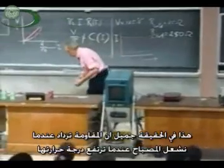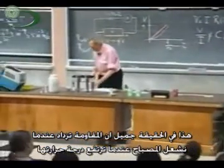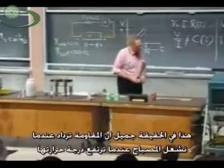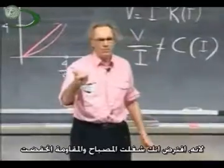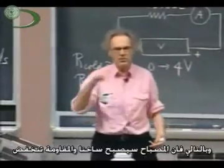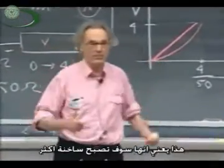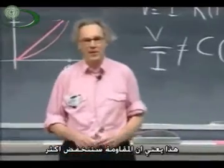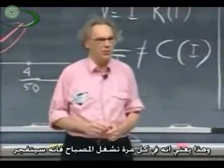It is actually very nice that resistances go up with light bulbs when the temperature goes up. Because suppose it were the other way around. Suppose you turn on a light bulb and the resistance would go down. The light bulb gets hot. Resistance goes down. That means the current goes up. The current goes up. That means it gets hotter. That means the resistance goes even further down. That means the current goes even further up. And so what it would mean is that every time you turn on a light bulb, it would,